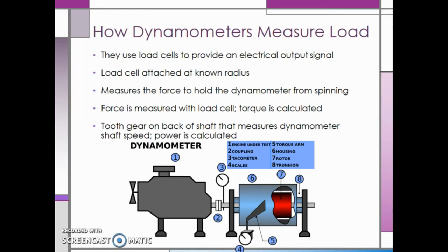There is also a toothed gear on the back of the shaft that measures the dynamometer shaft speed. Since we calculated torque and we know speed, we can also calculate power by taking the speed multiplied by the torque divided by 5252 in the English system. This will give us the horsepower produced or used.